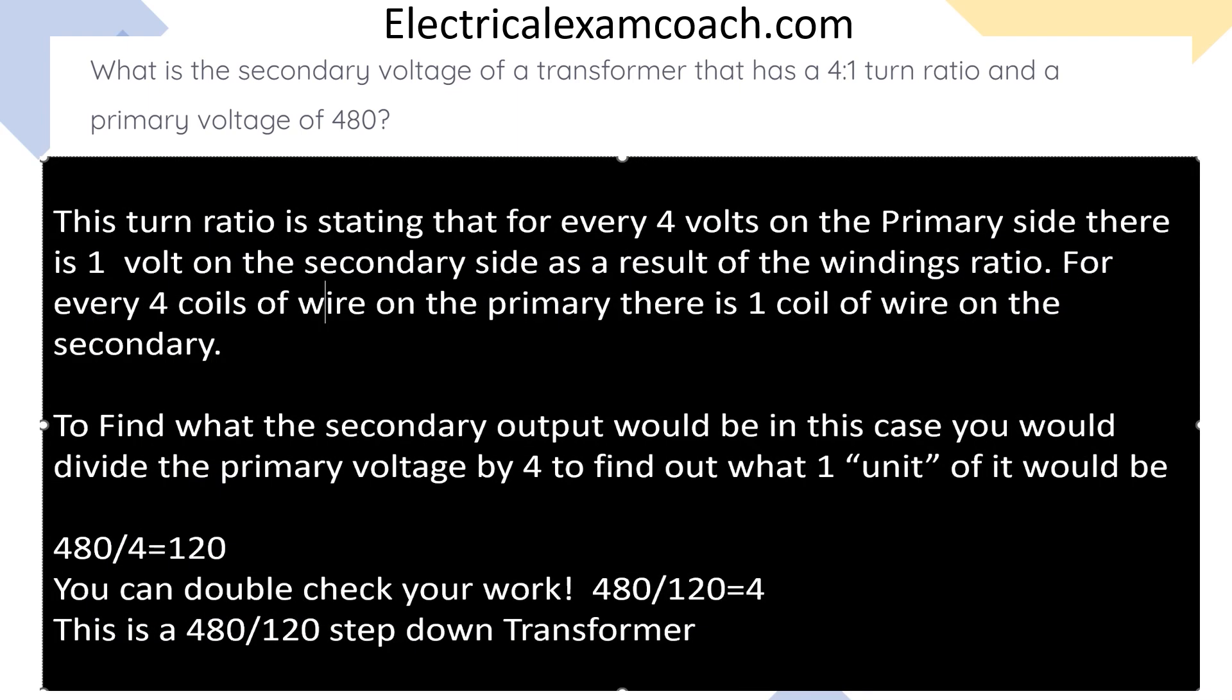This turns ratio is stating that for every four volts on the primary side, there is one volt on the secondary side as a result of the windings ratio. For every four coils of wire on the primary side, there is one coil of wire on the secondary side. To find out the secondary output, you would divide the primary voltage by four to find out what one unit of it is. We would take 480 divided by four and that equals 120. You can double check your work by dividing it back. 480 divided by 120 equals four. This is a 120-240 step-down transformer. You can visit electricalexamcoach.com to learn all about this and many more subjects. Let's get to it.